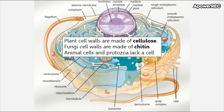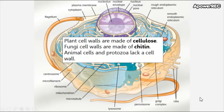Let's talk a little bit about the cell wall briefly. Plant cell walls are made up of cellulose, which gives them a very rigid structure — you often see them as a square shape due to the cellulose. Fungal cell walls are made of chitin, and this is very important. Animal cells and protozoa lack a cell wall. They do still have membranes, but they don't have these other components that would make a cell wall.